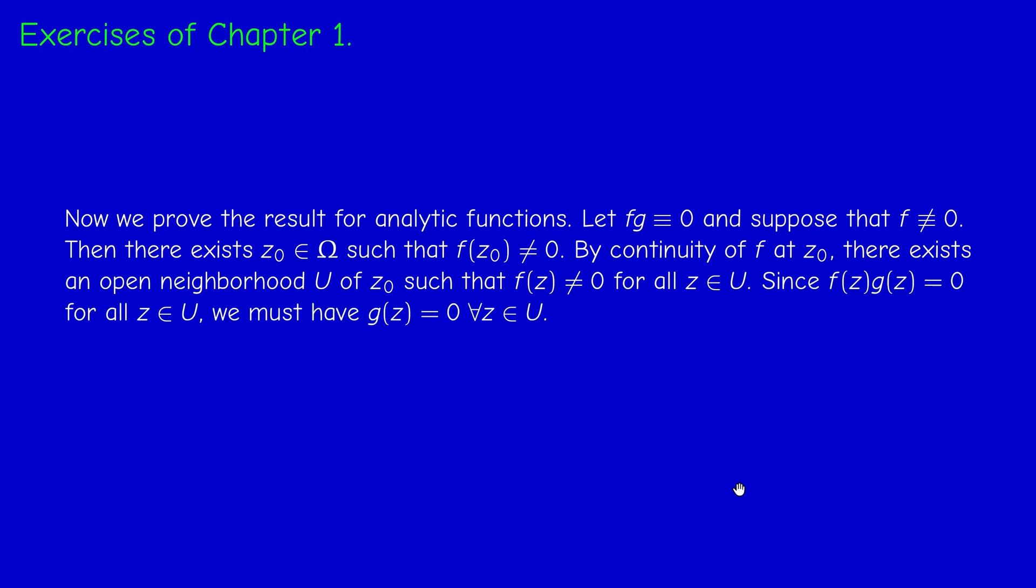But now, since the product is always zero and F is not zero, then necessarily G vanishes on U. Just take this equation, pick z in U. This product is zero and the first one is not zero, so necessarily the second one is zero because you can divide by F of z. So the first conclusion is that G vanishes on a neighborhood U.